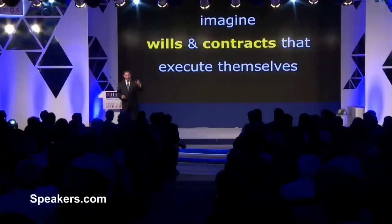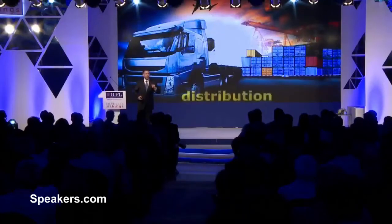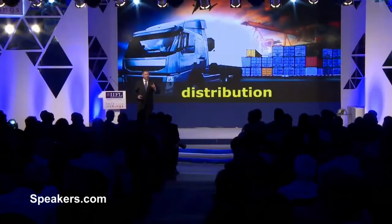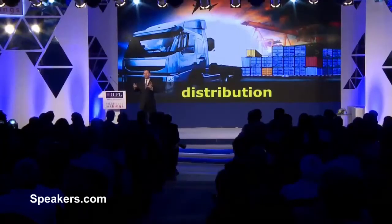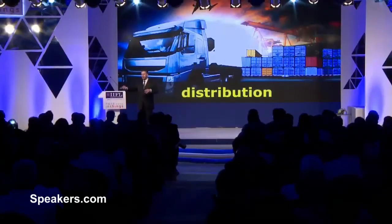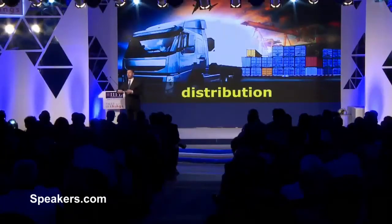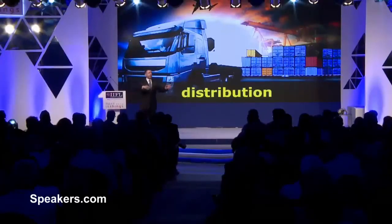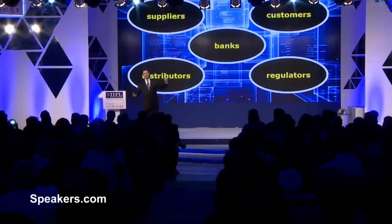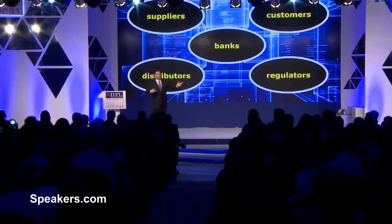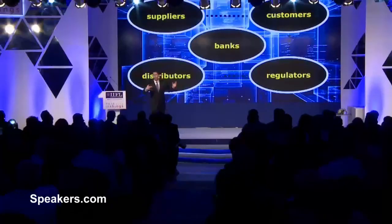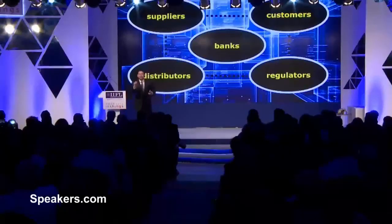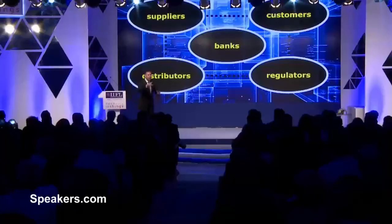This has had an unbelievable impact on the potential in the distribution sector. Imagine the different parties in a transaction — the 88 bales of cotton could easily involve 30 different companies. You've got the supplier, the customer, regulators, the distributors, the banks. Well, if everything's connected on a blockchain using smart contracts, then all those different parties are connected because they're the individual nodes on that private blockchain.